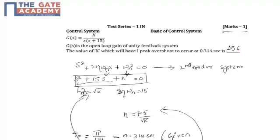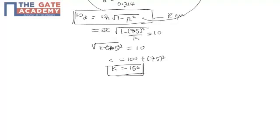From this question we have learned that the given transfer function can be reduced to standard second-order form. By comparing this equation and finding the values of ω_n and η, and using the peak time equation for ω_d, we can obtain the value of the unknown variable k.